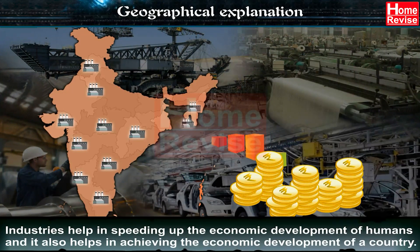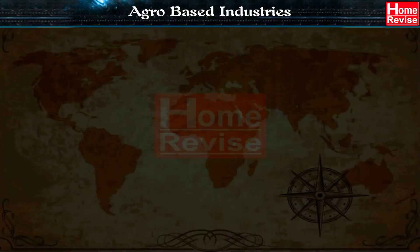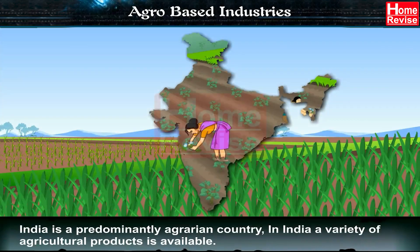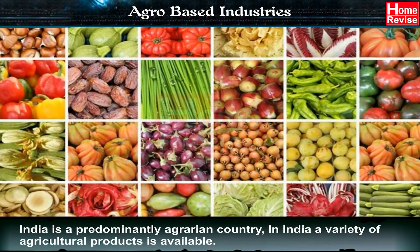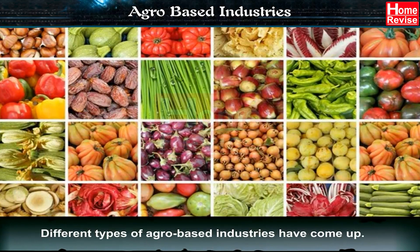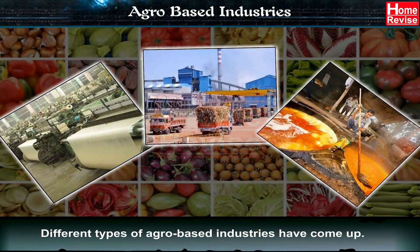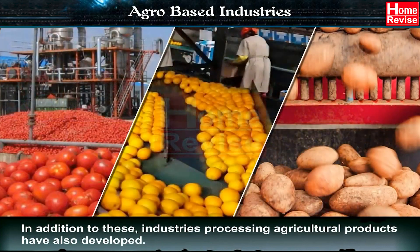Agro-based industries: India is a predominantly agrarian country. In India, a variety of agricultural products is available, and different types of agro-based industries have come up. In addition to these industries, processing of agricultural products has also developed.